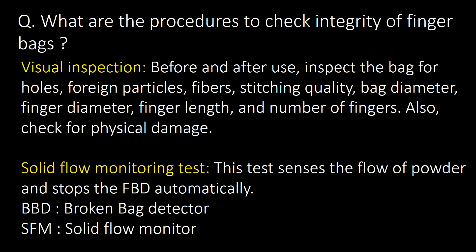What are the procedures to check the integrity of finger bags? Visual inspection and solid flow monitoring test are the two procedures commonly used. Visual inspection is done before and after use — we inspect the bag for holes, foreign particles, fibers, stitching quality, bag diameter, finger diameter, finger length, number of fingers, and physical damage. The second method is the solid flow monitoring test, done online — it senses the flow of powder and stops the FBD automatically. An alternative term used is BBD, which stands for Broken Bag Detector.